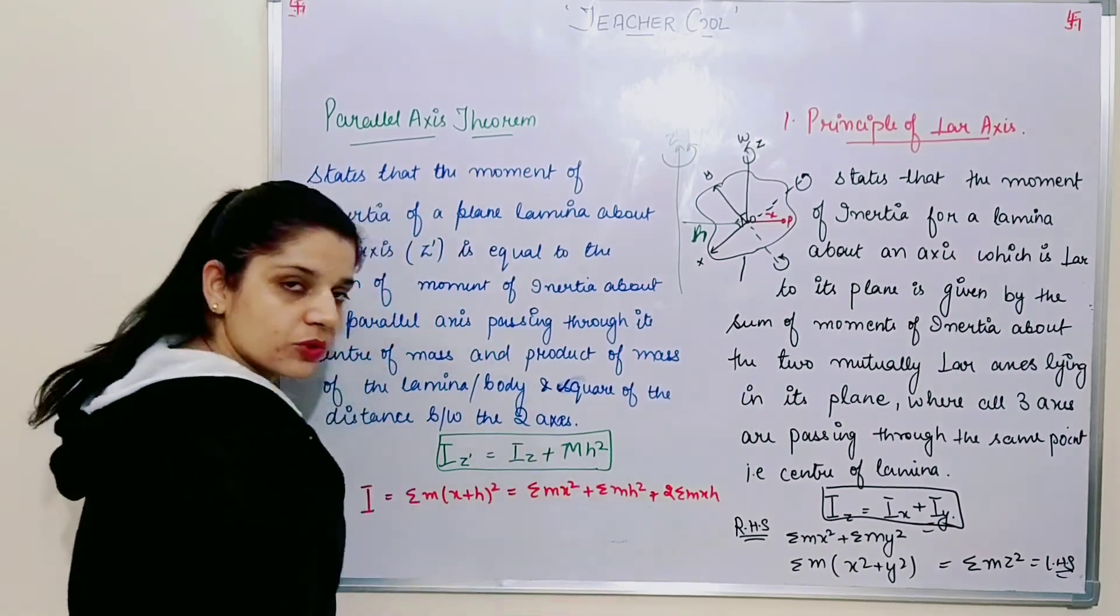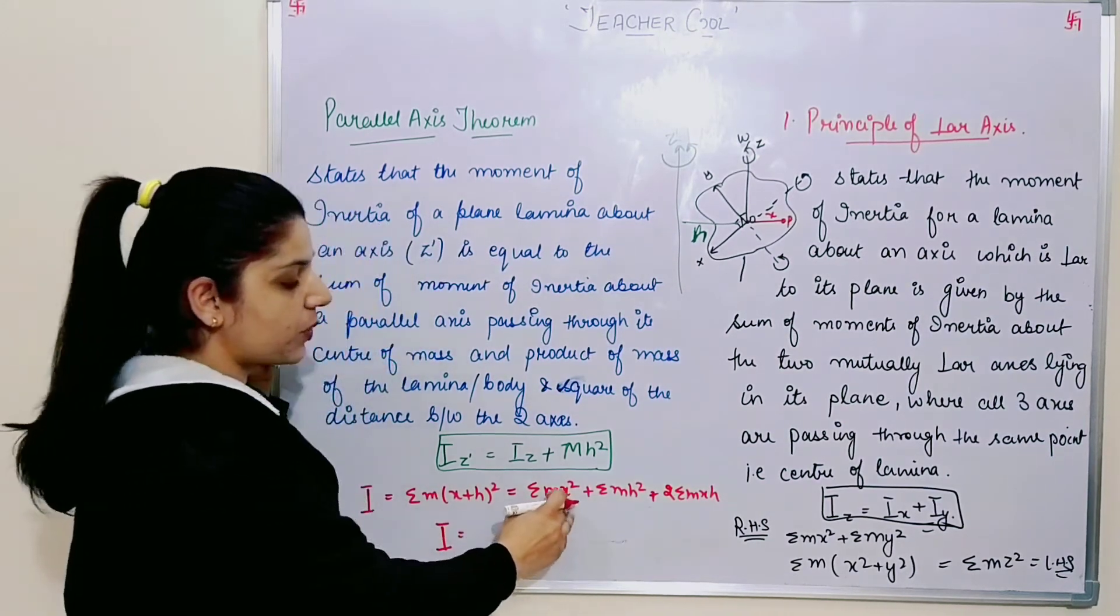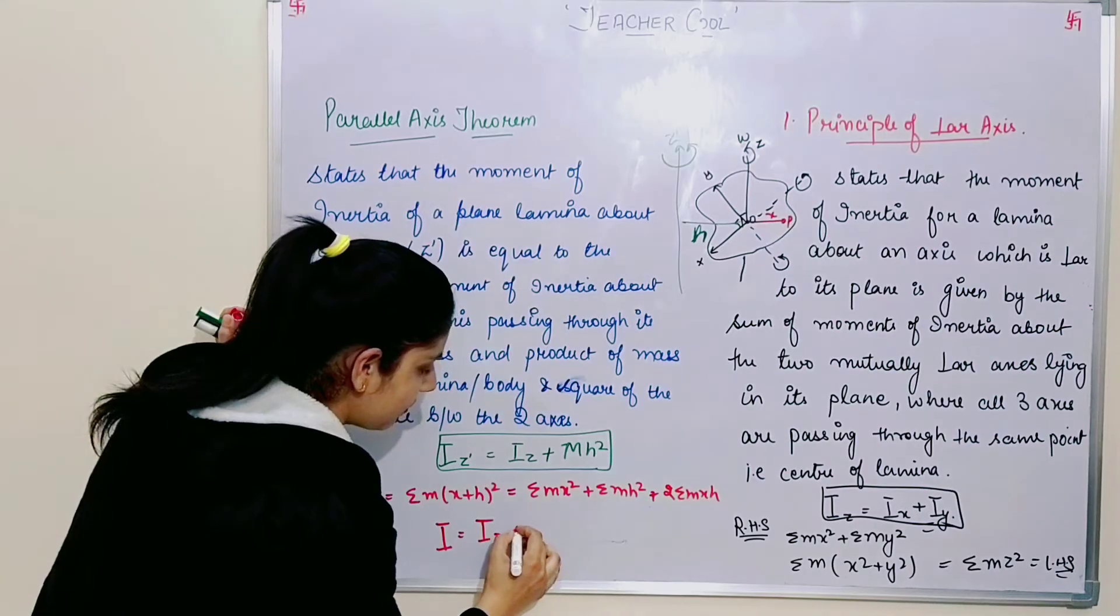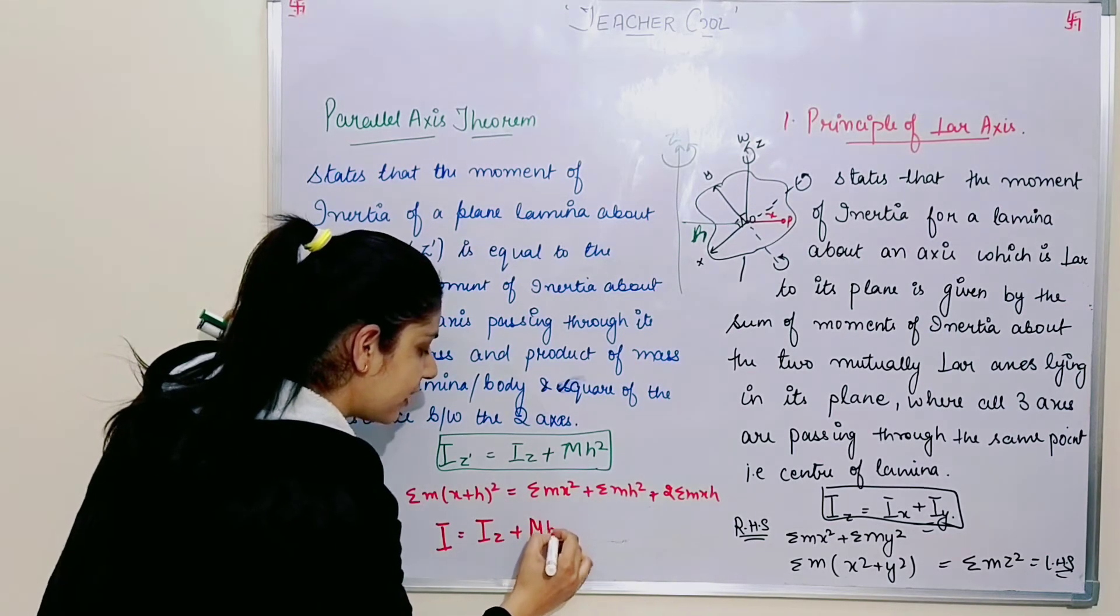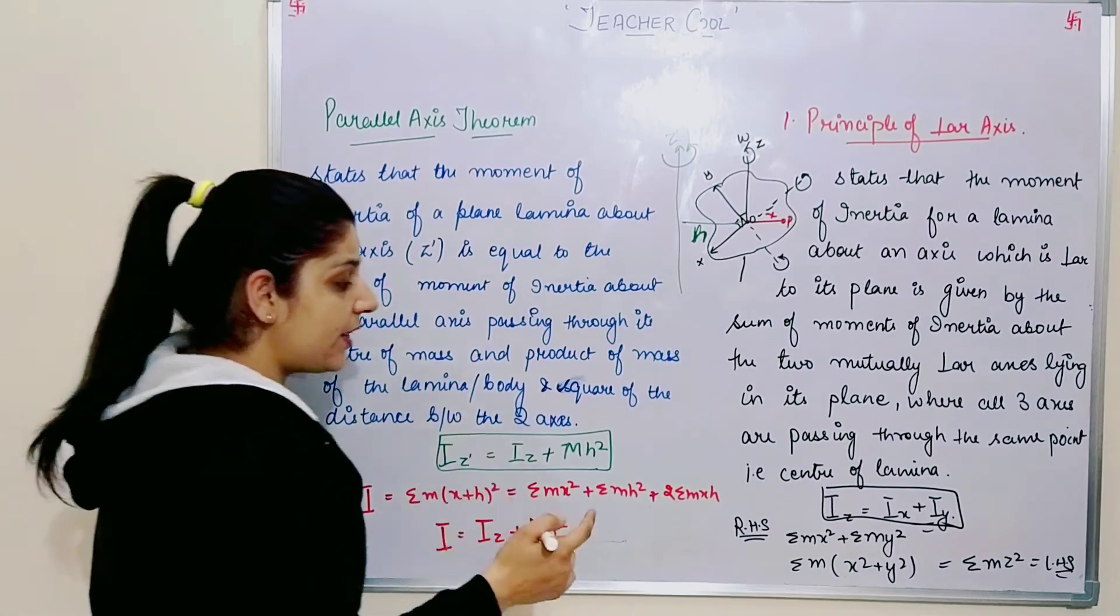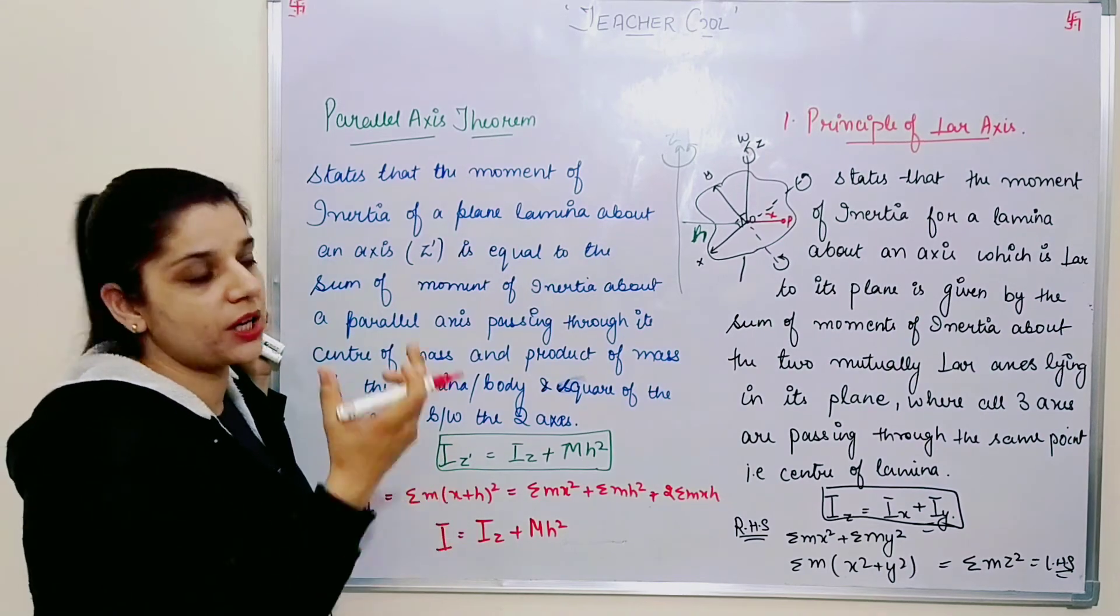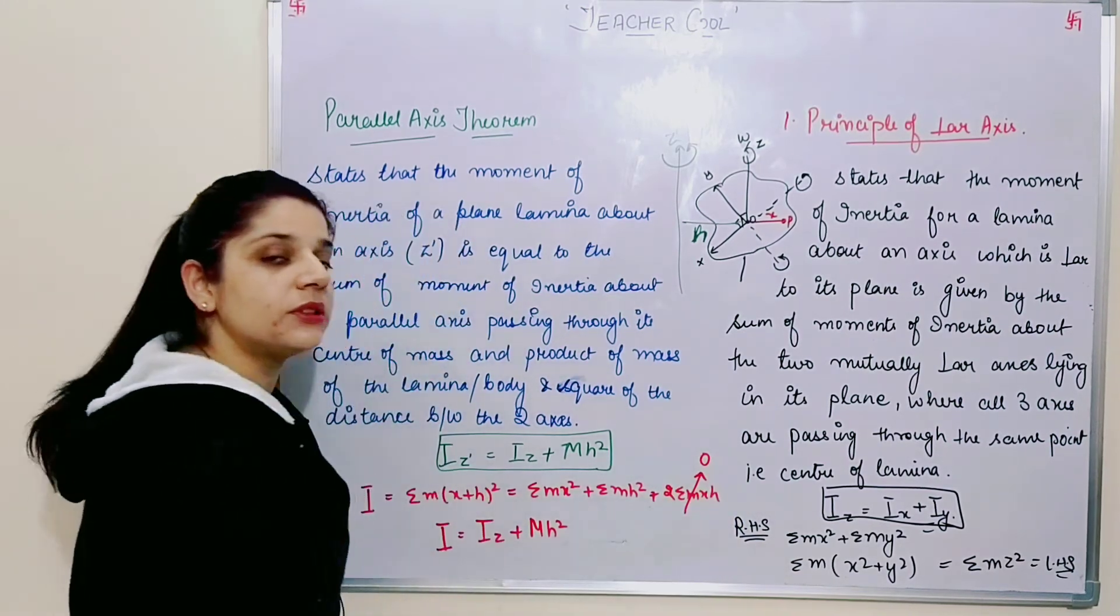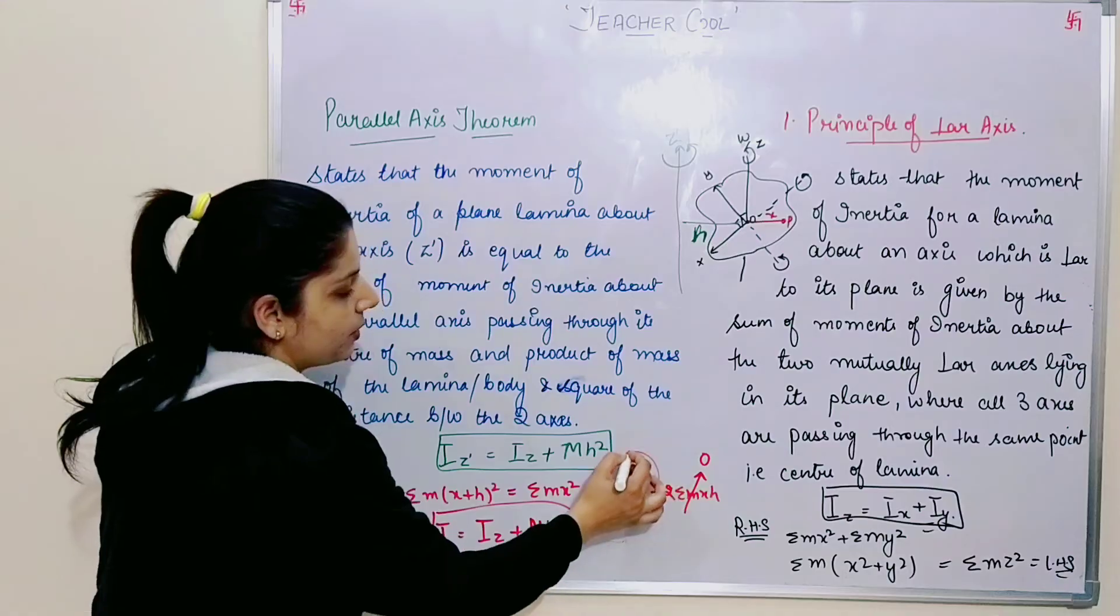Now, looking at these three terms carefully: I equals summation m x square, which is the original IZ, plus h is constant so summation only applies to m giving m h square, plus this term for a body which is in a balanced stable state, this cross product turns out to be zero. So only two terms remain, and these two terms are making what I just stated in the theorem.